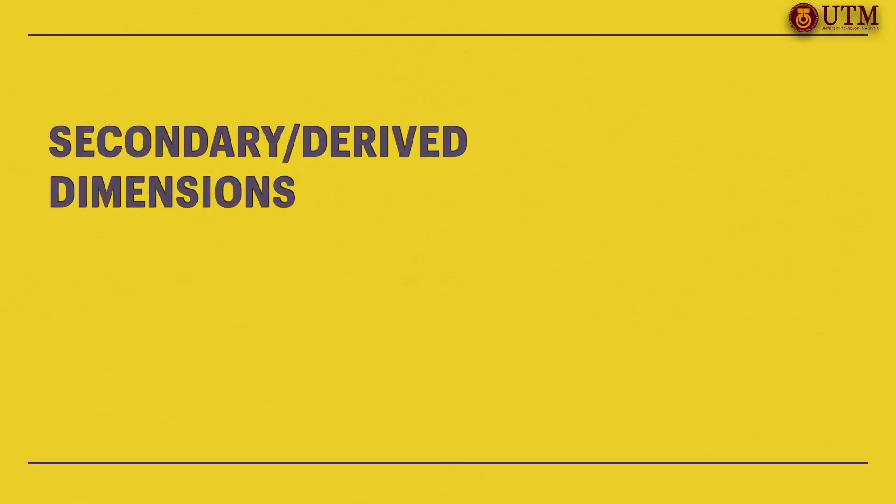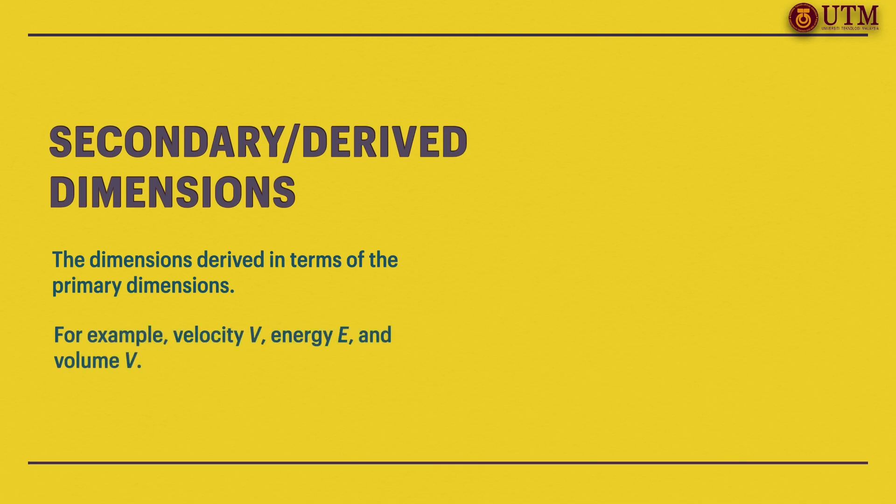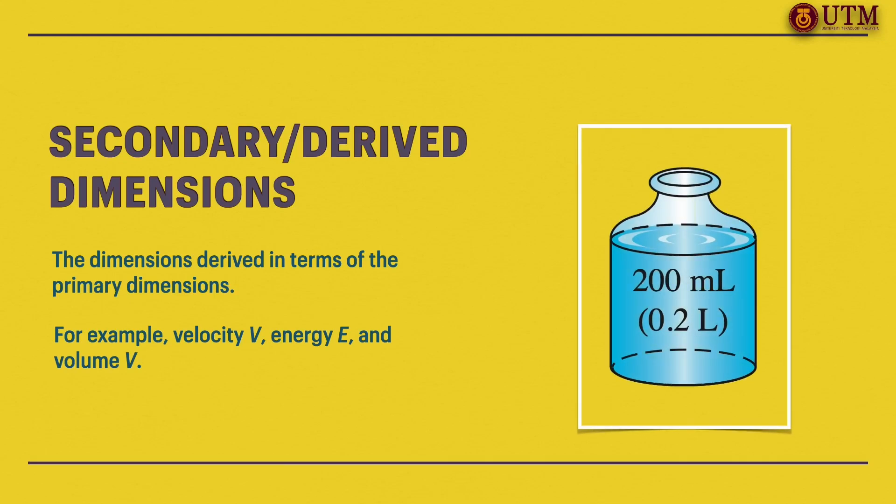The secondary dimensions or derived dimensions are dimensions derived in terms of the primary dimensions. For example, velocity, energy and volume. As shown here, volume is derived from dimension of length to the power of 3.